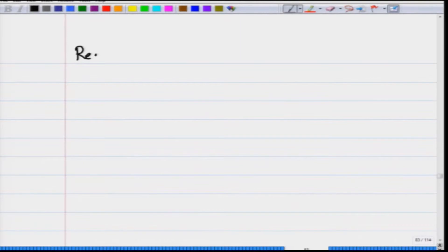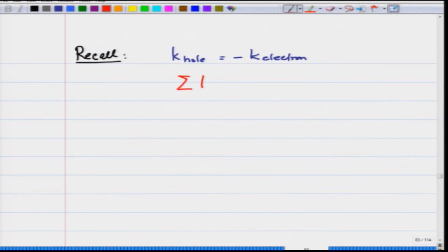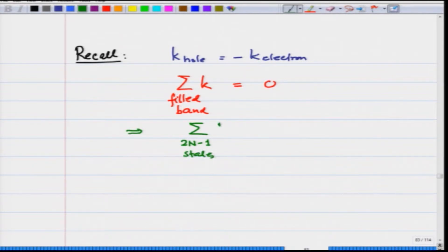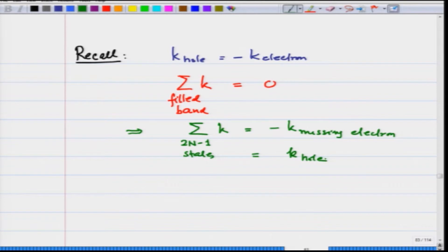Recall that when I obtained k hole equals minus k electron, I used the fact that the summation over k for a filled band is equal to 0, and therefore this implies that the summation over the 2n minus 1 filled states of k is equal to minus k of the missing electron, and this is what I call k hole. This is how I got k hole equals minus k electron.